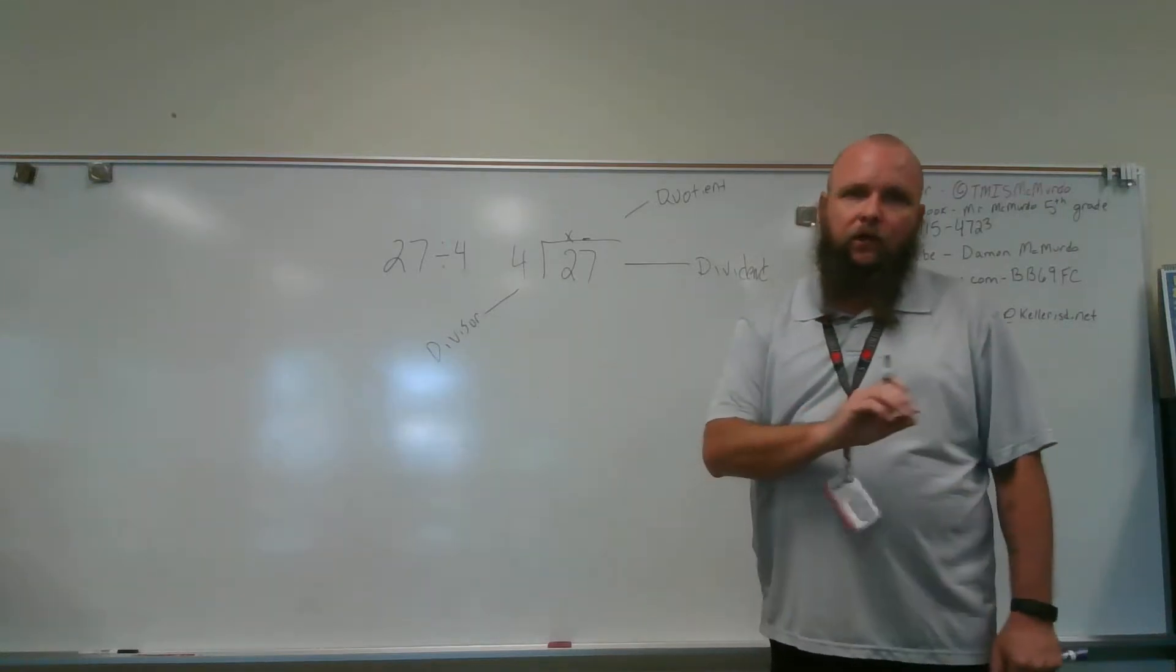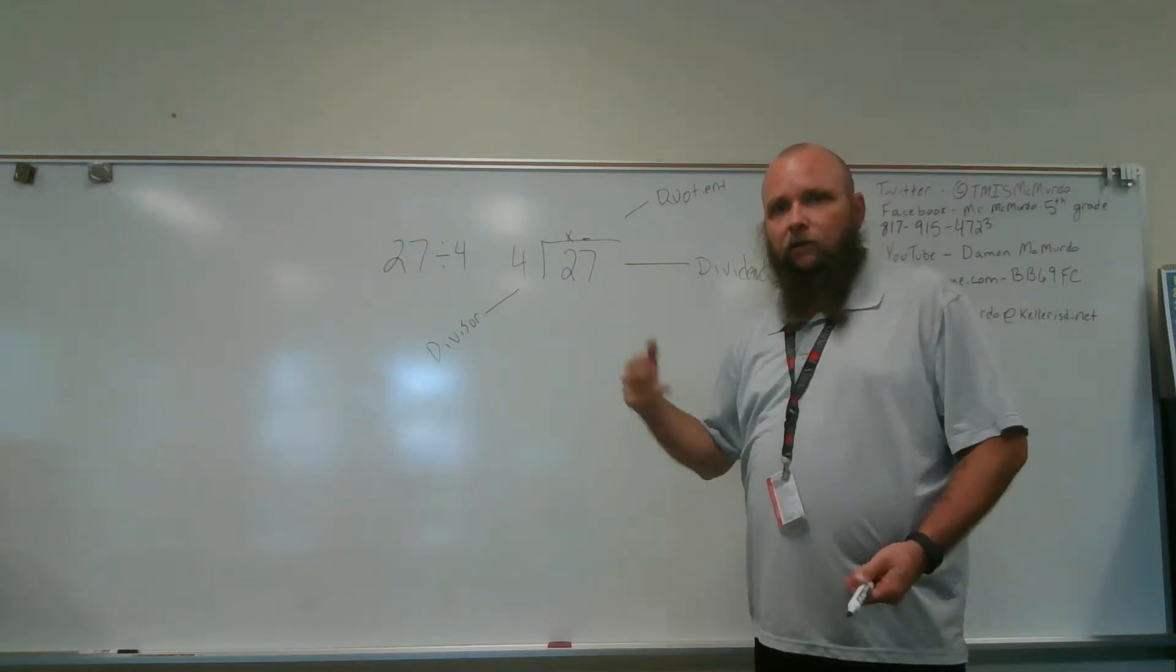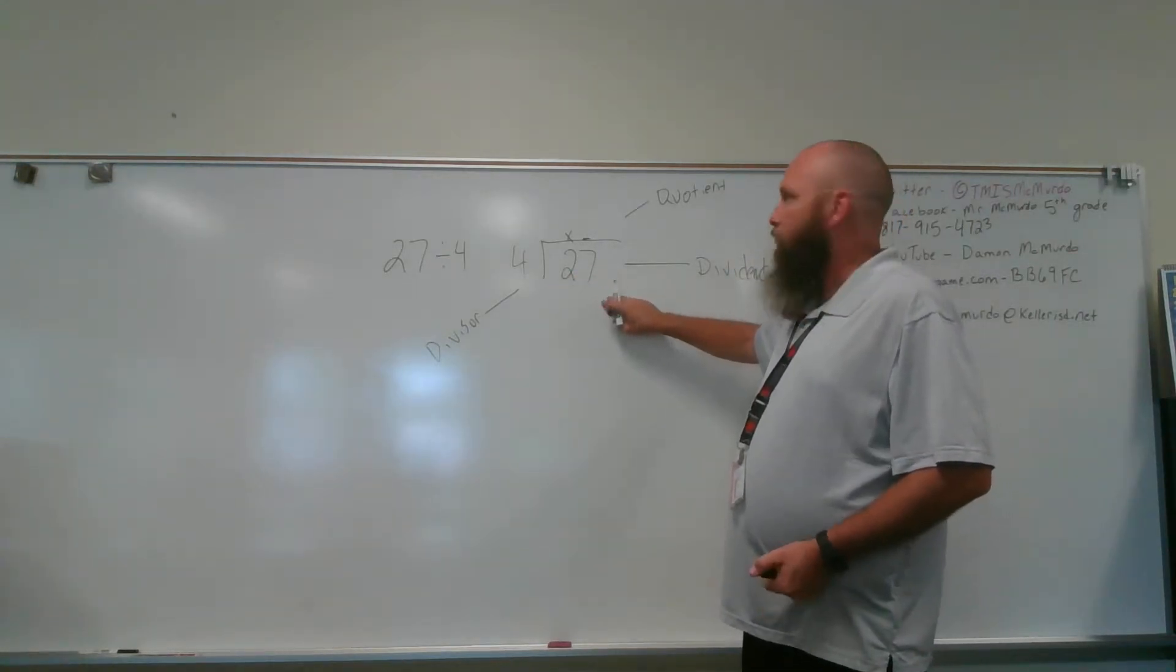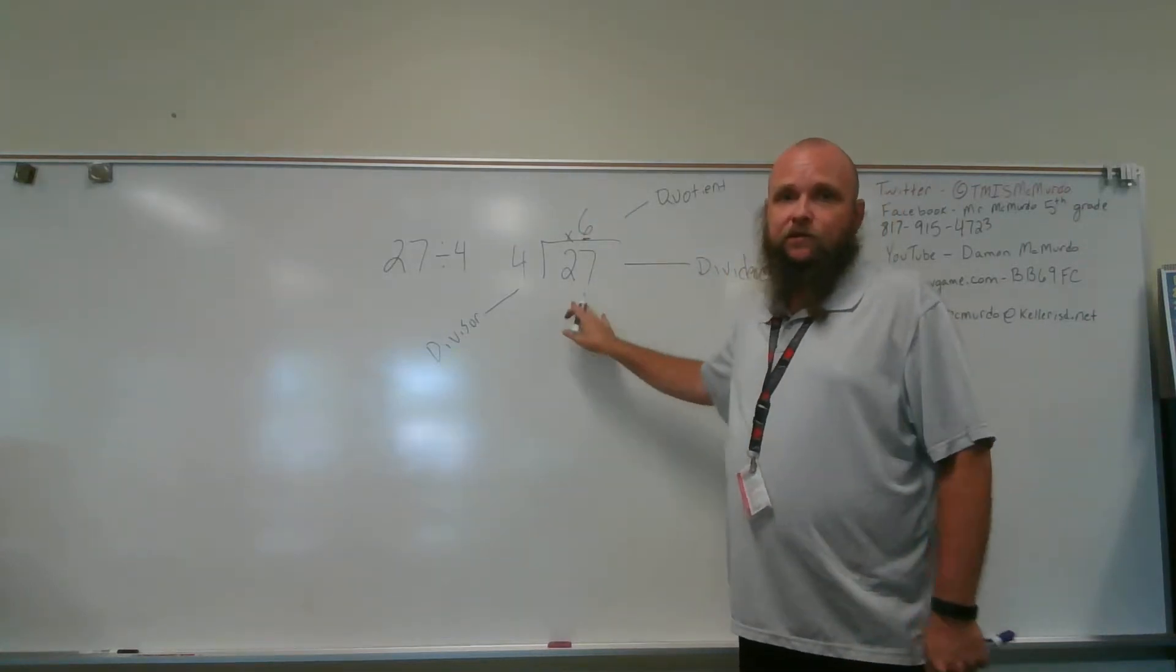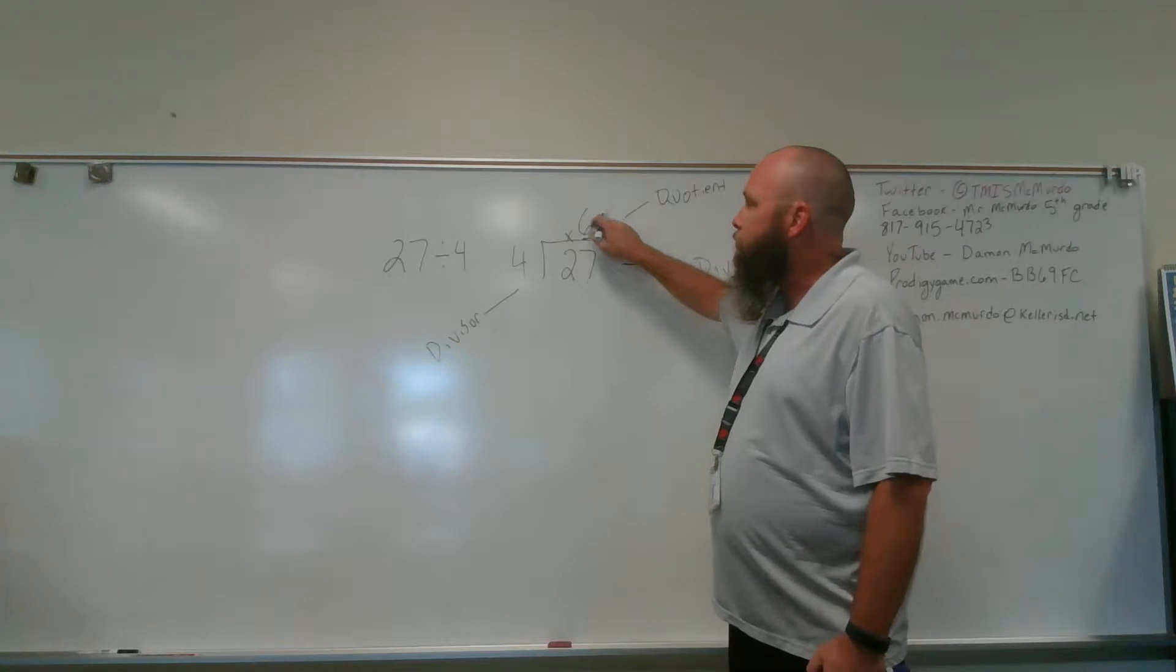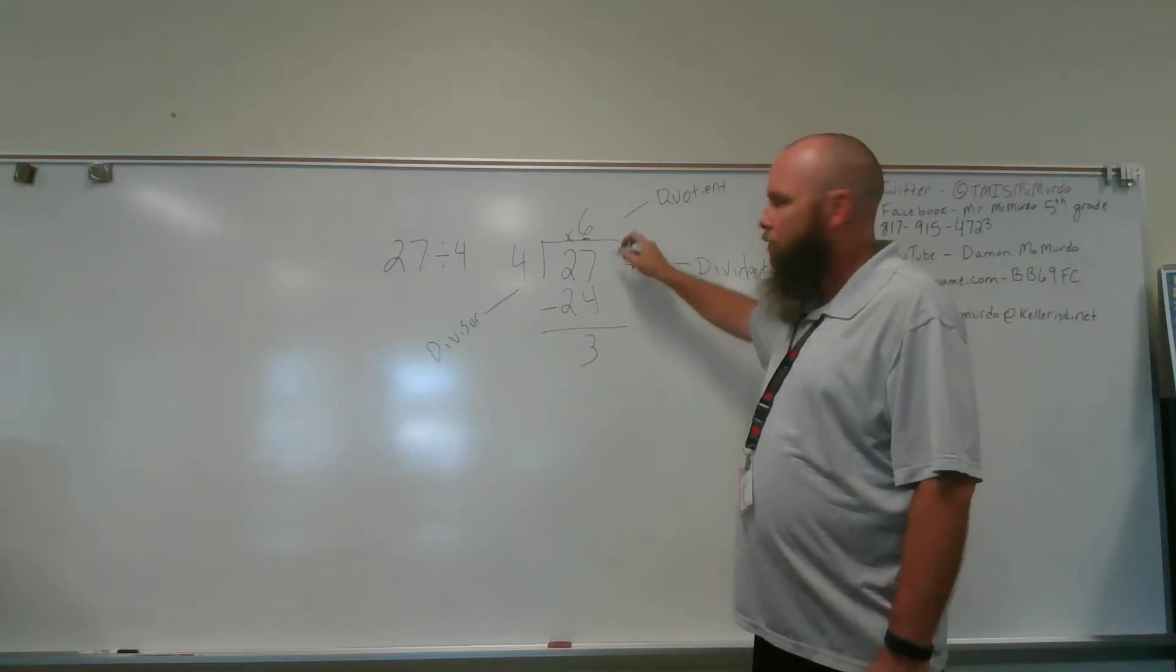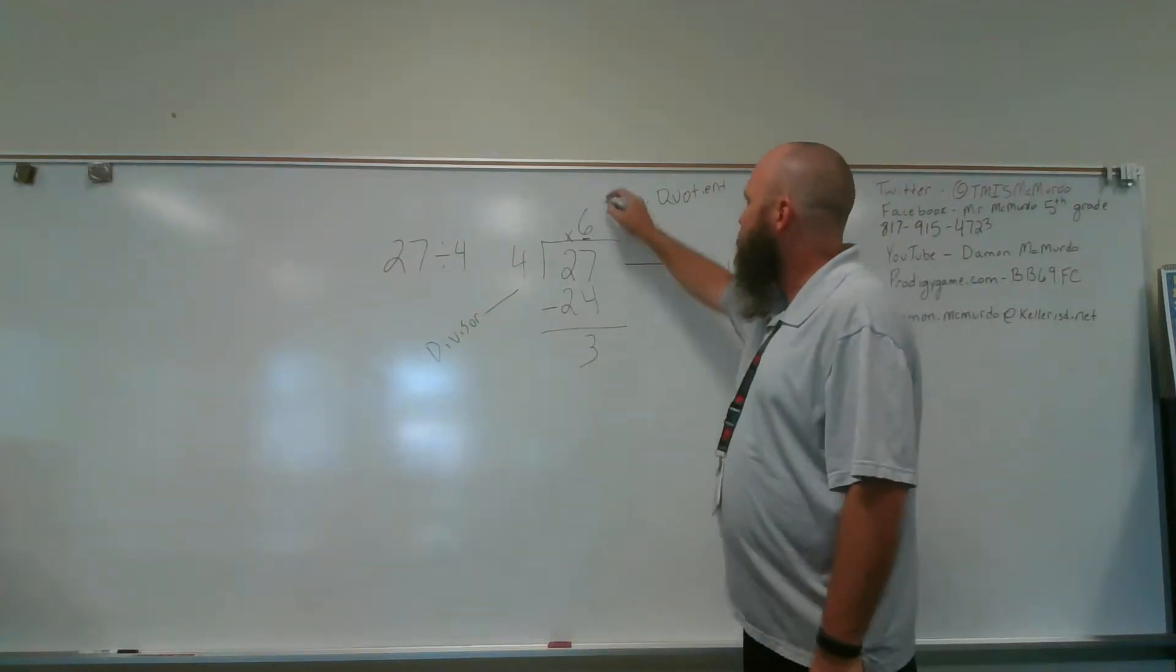Does 4 go into 27? Well yes, we've already determined. We looked at our multiples of 4. We've looked at our multiples of 4, and we know that it will go into 27, as close as we can get to 27, is 6 times. 7 times 4 gives us 28, too big. We cannot go bigger than what we have here. Then I do 6 times 4 is 24. I subtract, and I get 3. If I have nothing else to bring down, there's no other numbers here that tells me that this 3 is going to be my remainder.